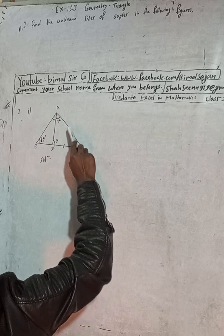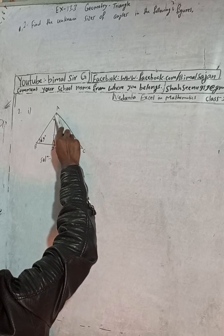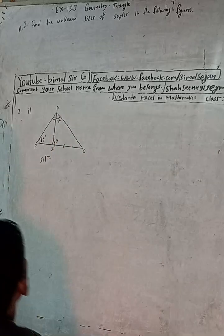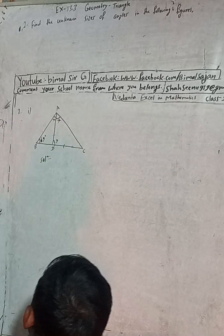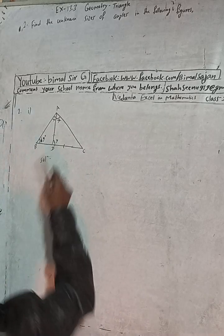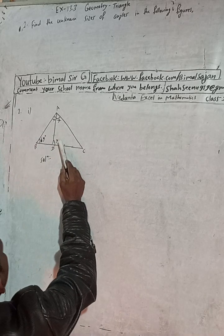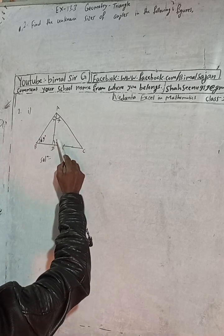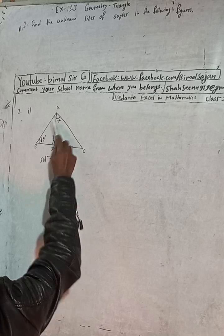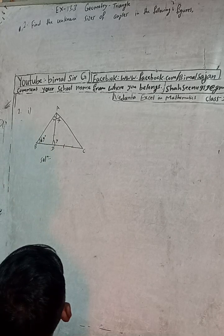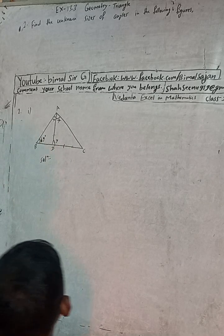Since it is an isosceles triangle, angle x is equal to the base angle. And this y is the exterior angle for this triangle, so y is equal to the sum of the two non-adjacent interior angles.